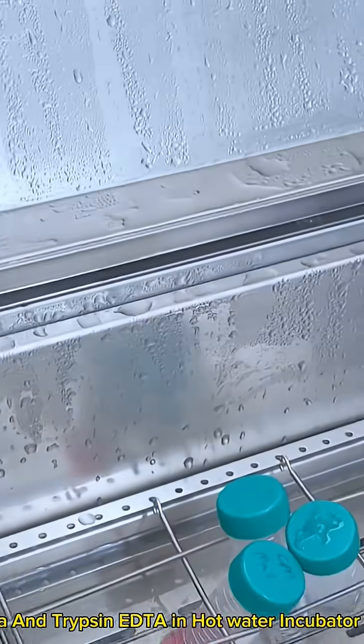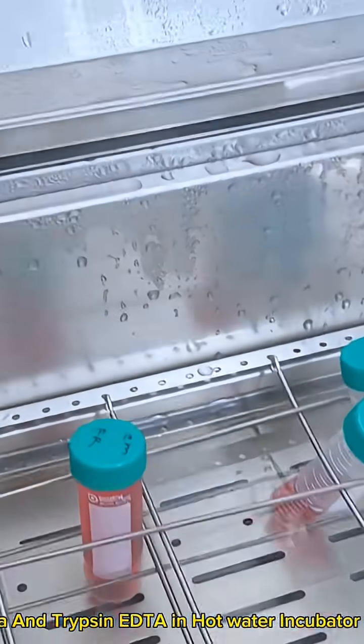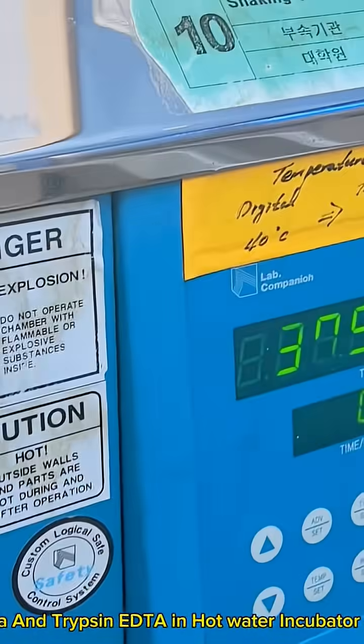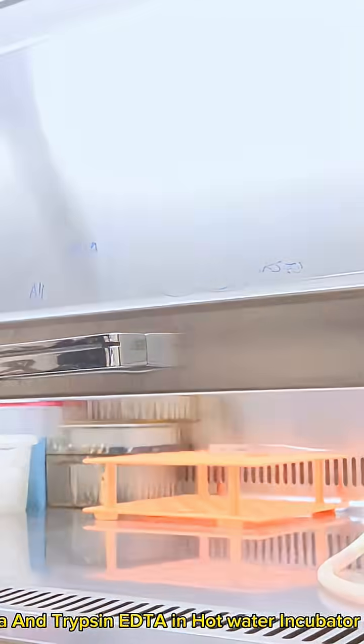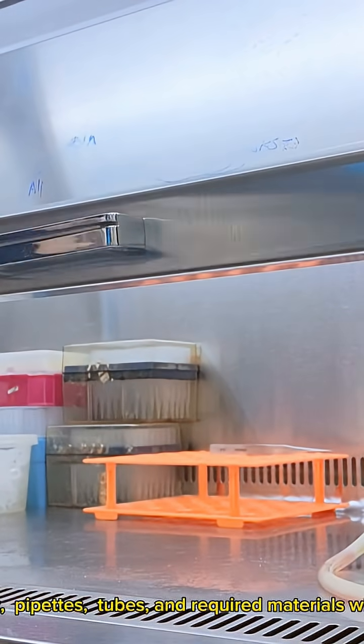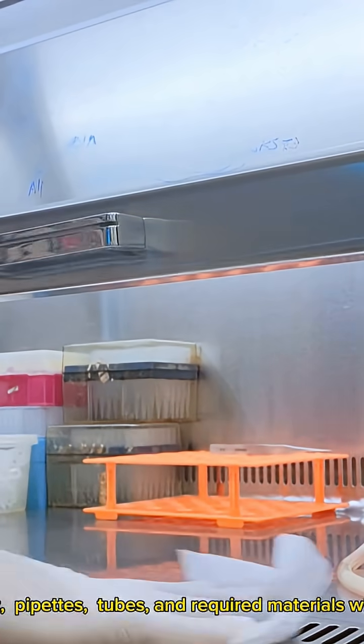Put PBS, complete media, and trypsin EDTA in a water bath at 37 degrees Celsius for 30 minutes. Clean the biosafety cabinet, pipettes, tubes, and required materials with 70% ethanol.